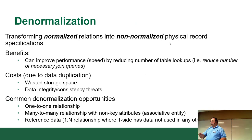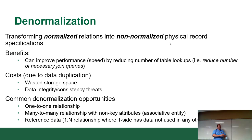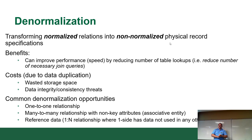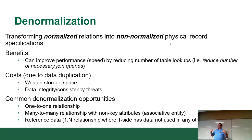That covers the important stuff on indexes. Denormalization is the next quick topic. Denormalization is transforming normalized relations into non-normalized relations. Sometimes it's possible to get your data too normalized, where you end up with a big pile of joins that becomes cumbersome and slows things down, so you'll want to denormalize.